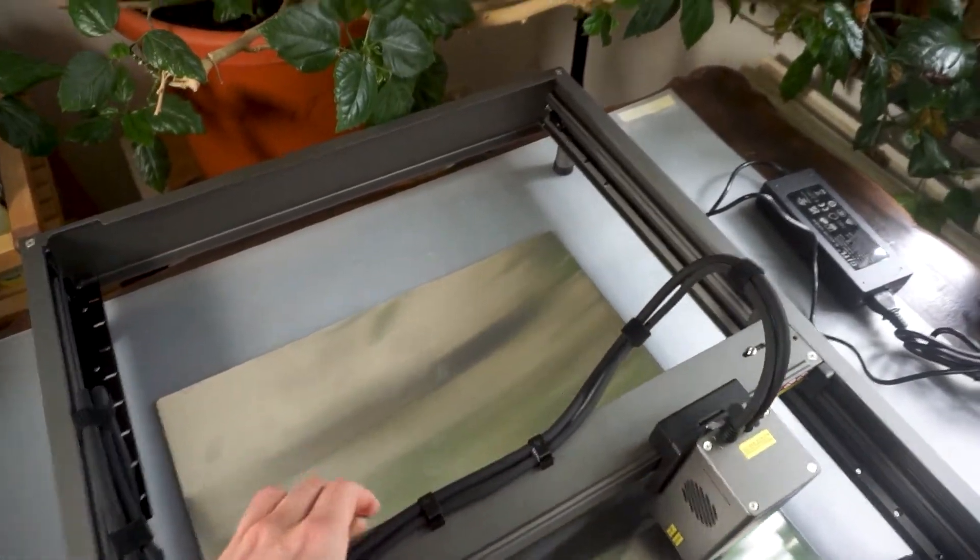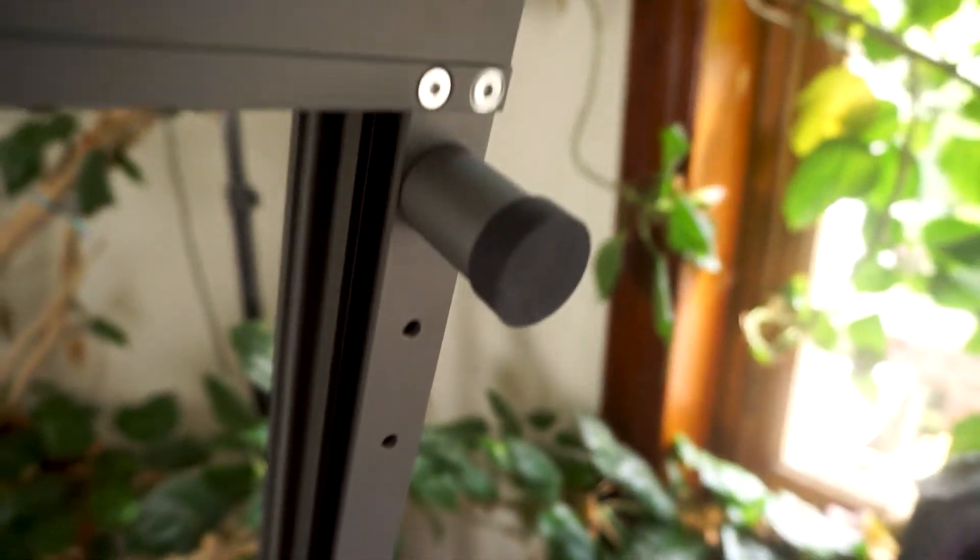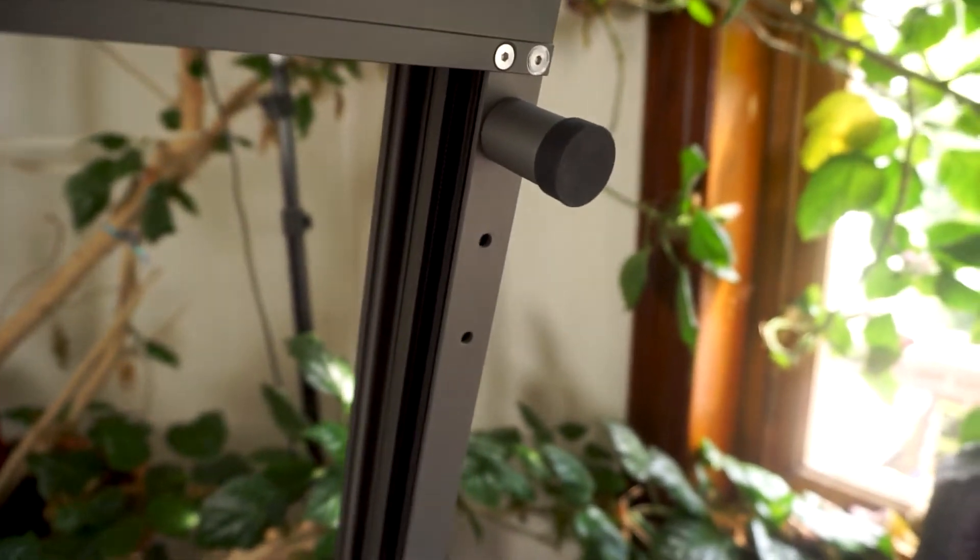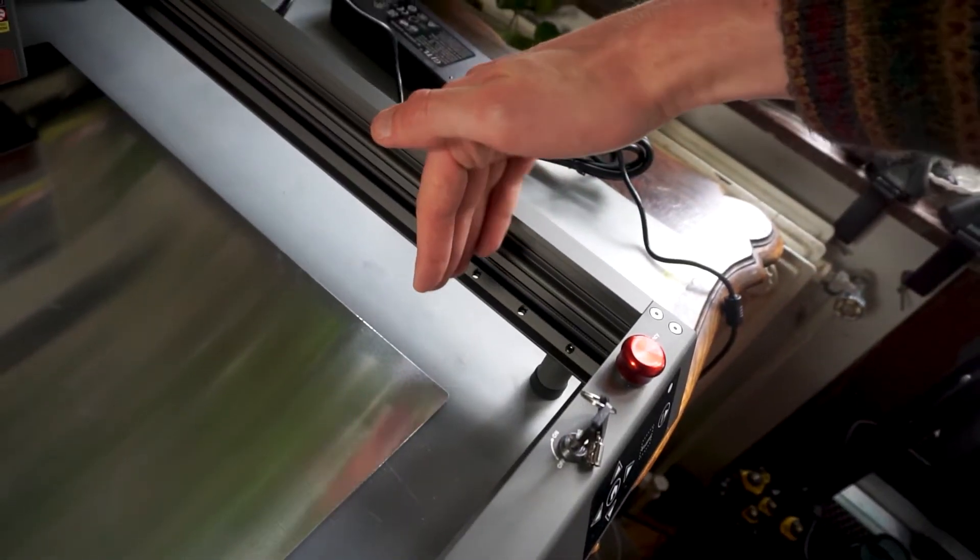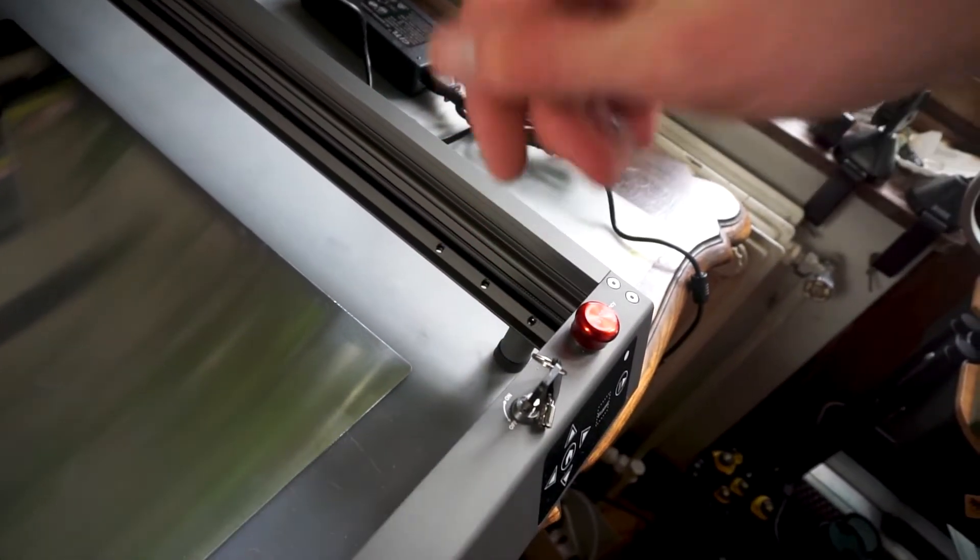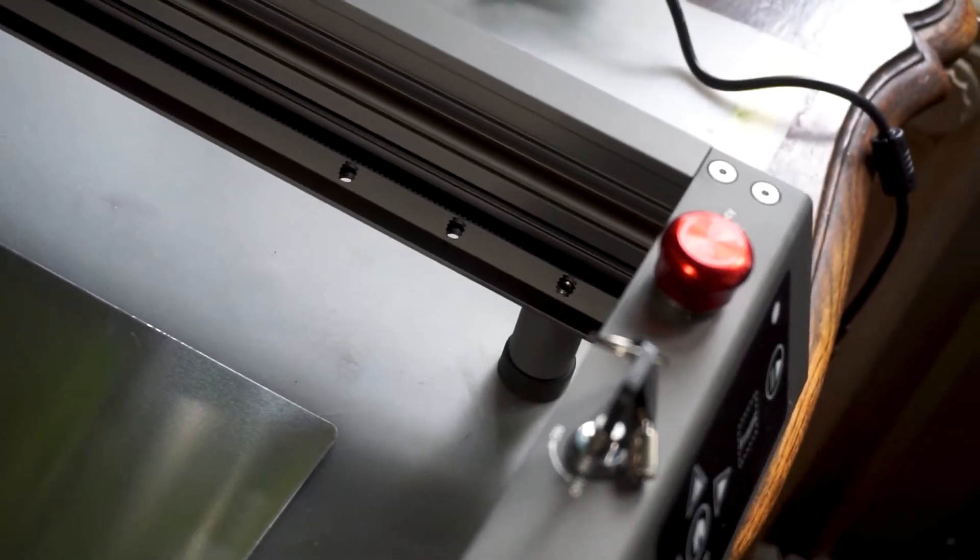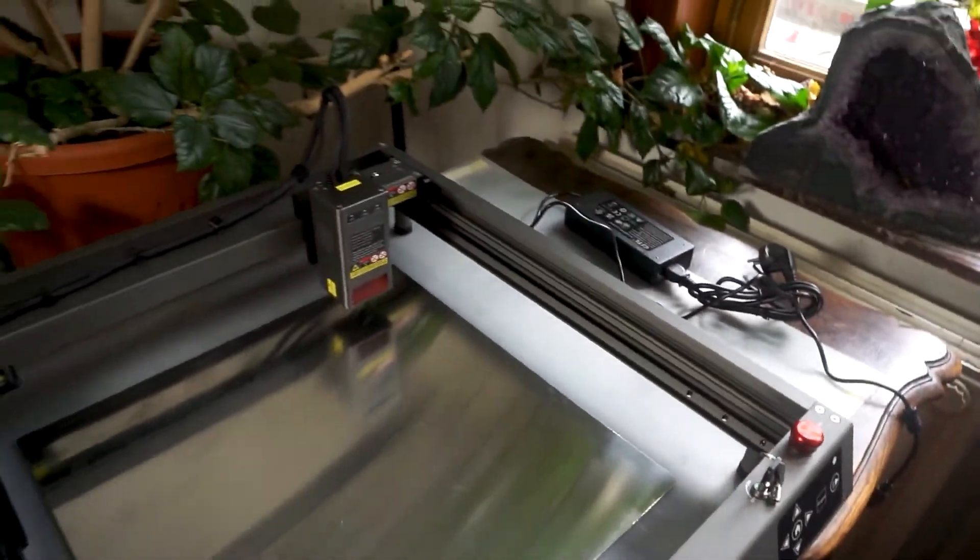The aluminum frame is already assembled. You just need to screw in the legs and connect a few cables. The legs are adjustable in width, with 3 different holes on each side of the machine to fit workbenches of different depths.